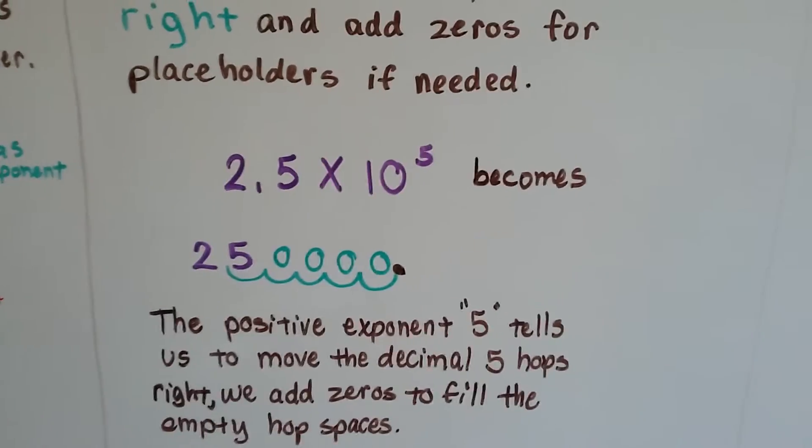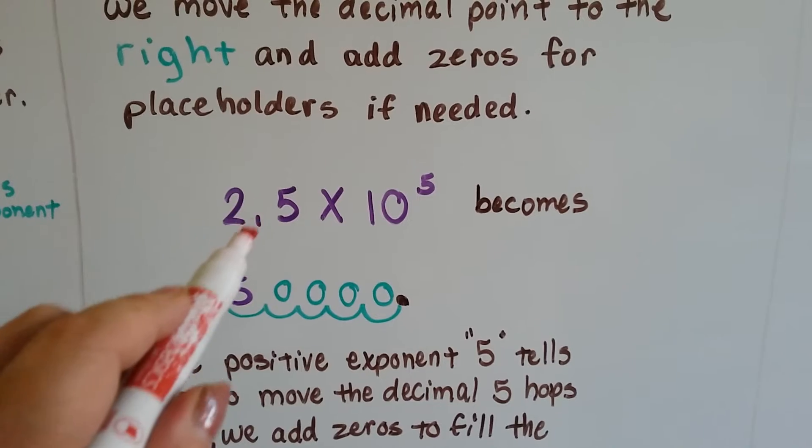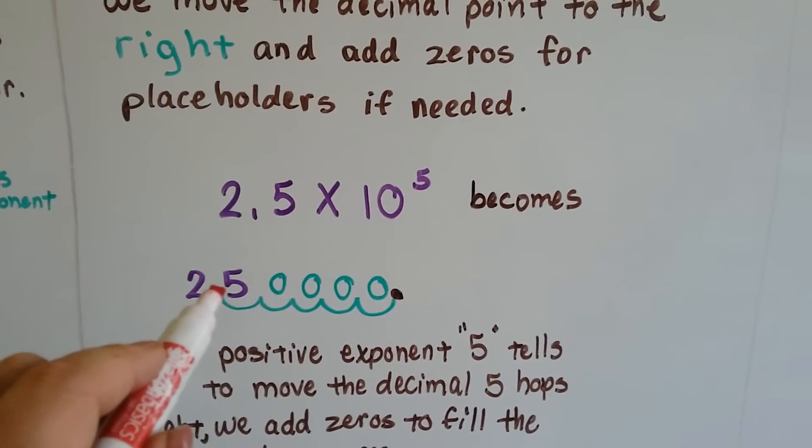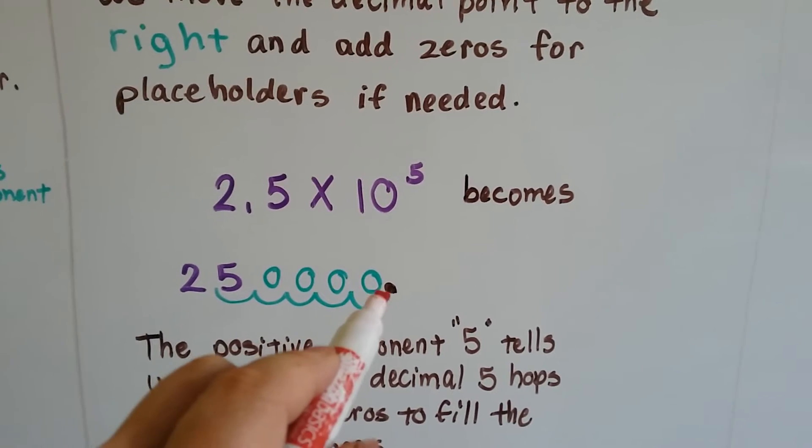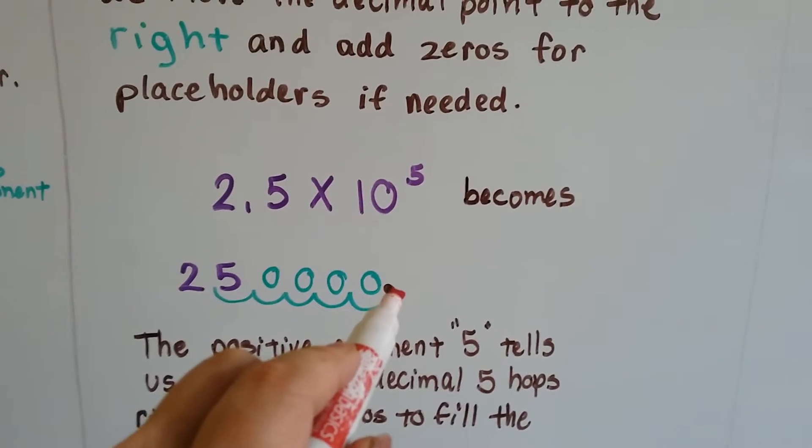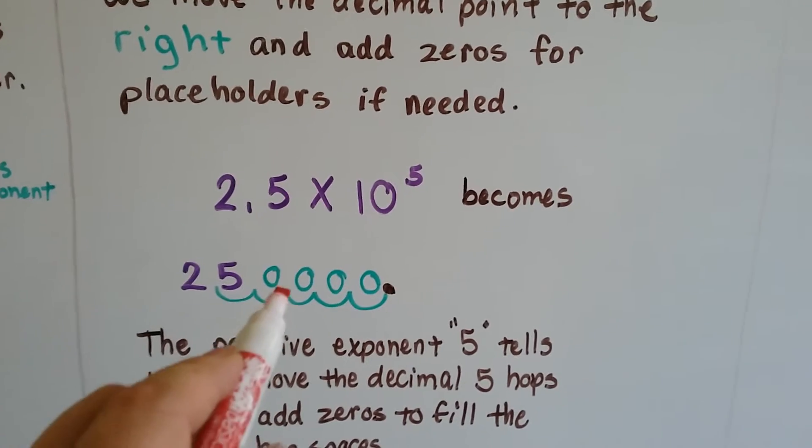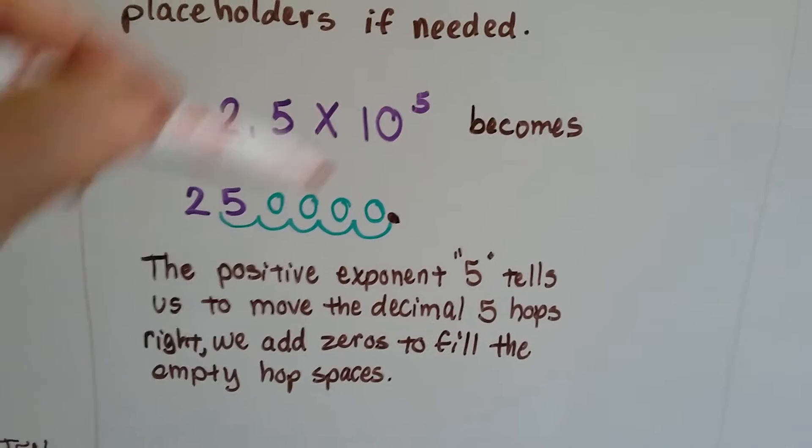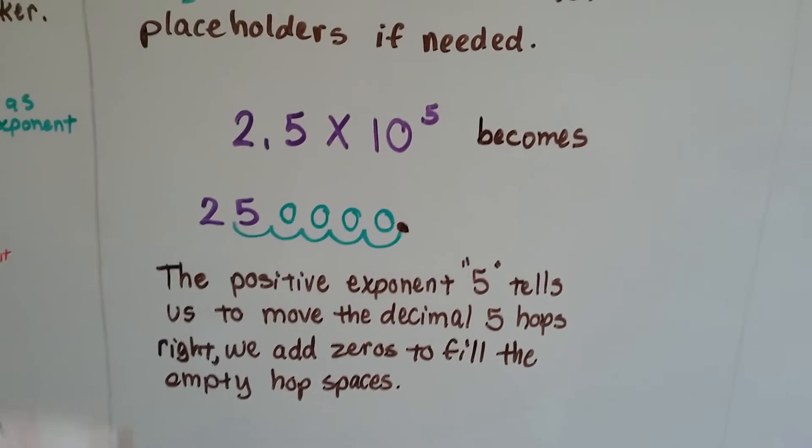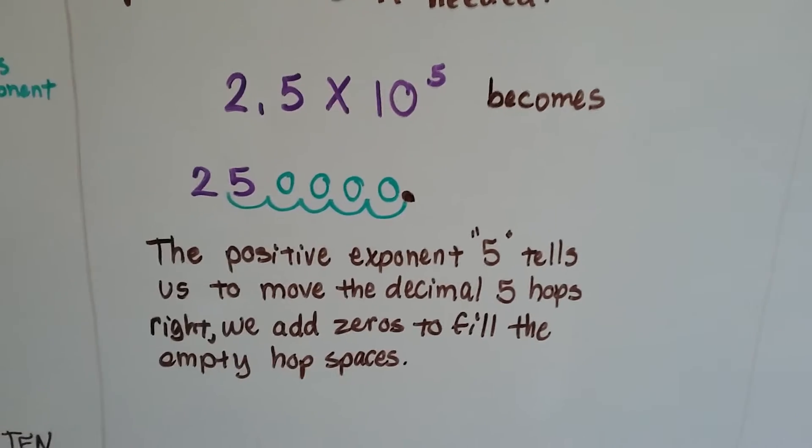2.5 times 10 to the fifth becomes a 2 and a 5, and the decimal point's in between the 2 and the 5. And we hop 5 times: 1, 2, 3, 4, 5. That's where the decimal point is going to go. We fill these empty spaces with zeros and we can see that it's 250,000. The positive exponent 5 tells us to move the decimal 5 hops right. We add the zeros to fill the empty hop spaces.